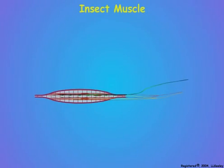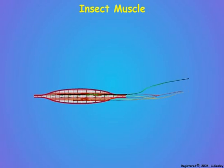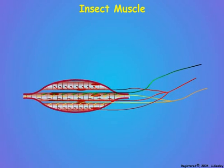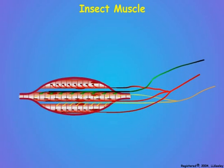Here is an insect muscle, along with the neurons that innervate the muscle fibers. Let us diagrammatically expand and separate the muscle fibers, to better see the relationships between the muscle fibers and their controlling neurons.